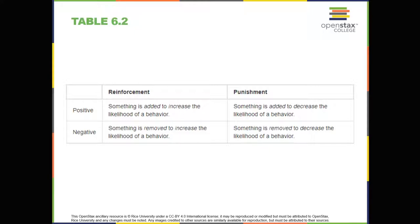In discussing operant conditioning, we use several everyday words – positive, negative, reinforcement, and punishment – in a specialized manner. In operant conditioning, positive and negative do not mean good and bad. Instead, positive means you're adding something, and negative means you're taking something away. Reinforcement means you're increasing a behavior, and punishment means you're decreasing a behavior.